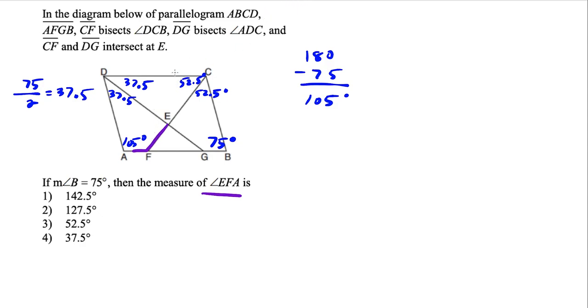But notice we have another alternate interior angle here, we have this Z shape here. So if this angle is 52 and a half degrees, then this angle is 52 and a half degrees.